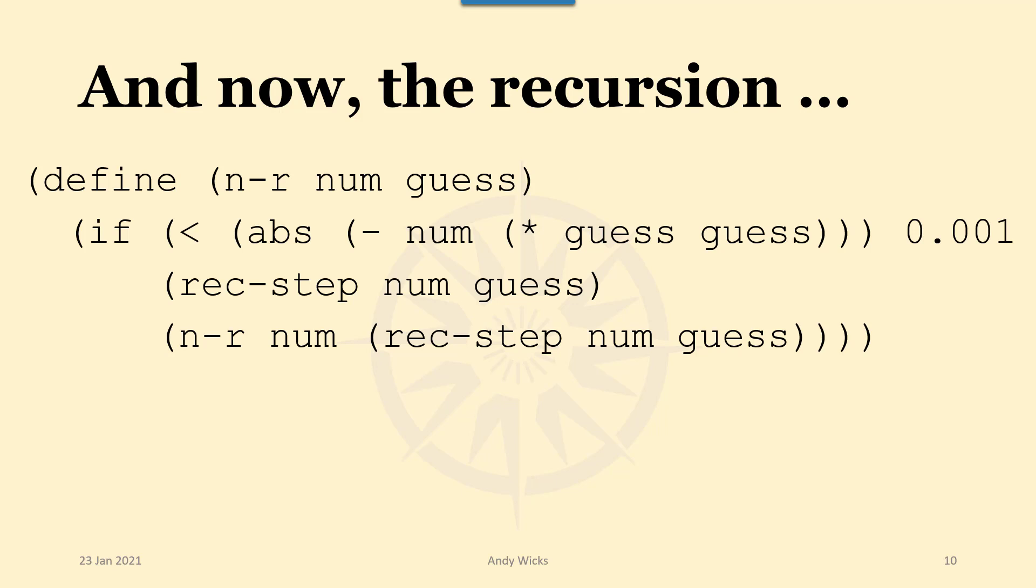If the answer we get is less than 0.001 then we just output the number that we get when we feed our number and guess into rec-step. Alternatively if it isn't less than 0.001 then there must be a bigger error than we want. So we want to do n-r again. In other words we're going to send ourselves back to the beginning of n-r to do the same work again. But this time round we're feeding in rec-step num guess as the answer that we're looking for. So in this way we can keep going round and round until we get an answer that's within two decimal places of being right.